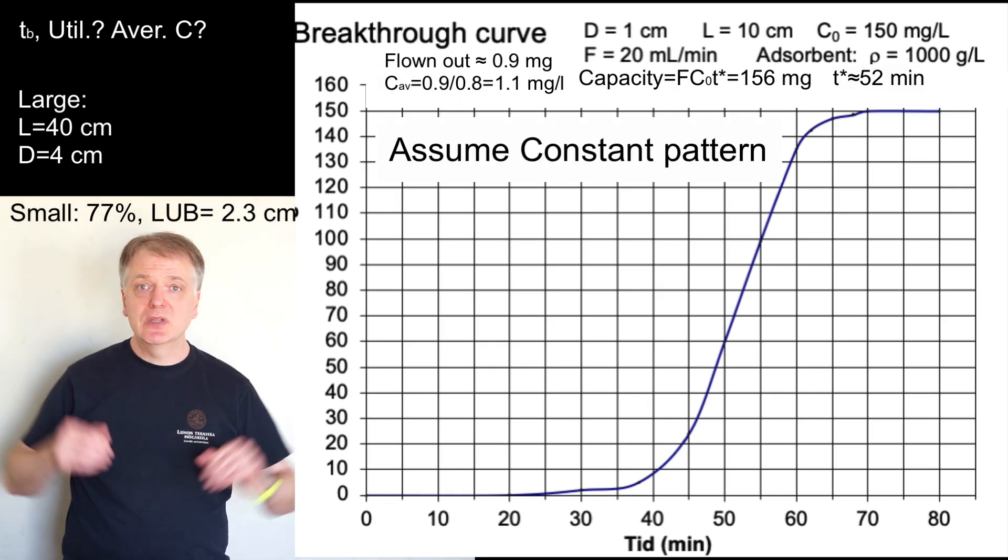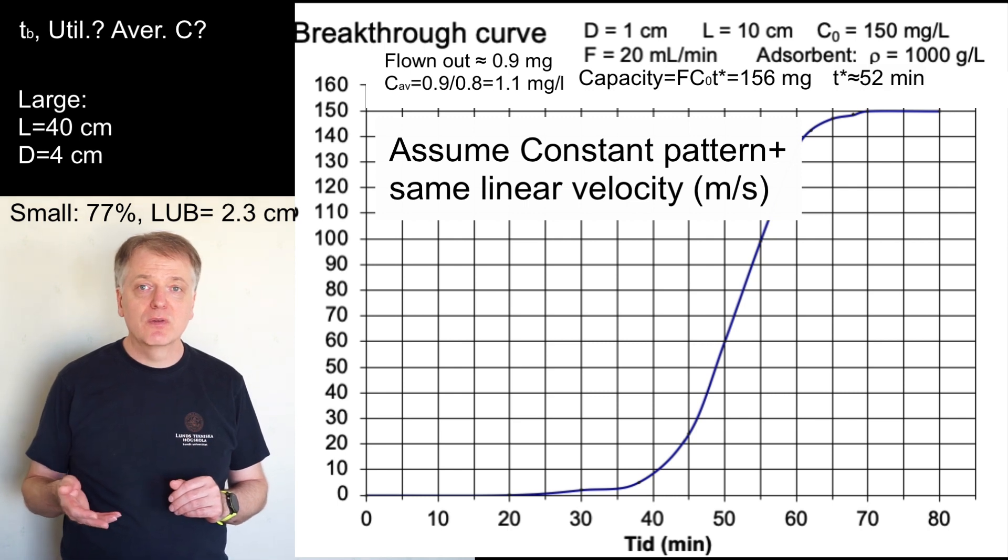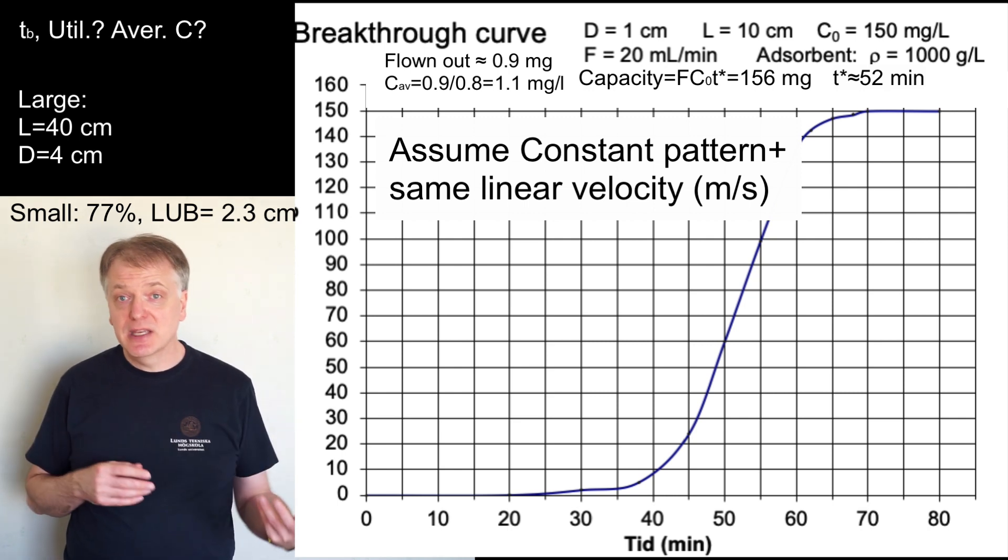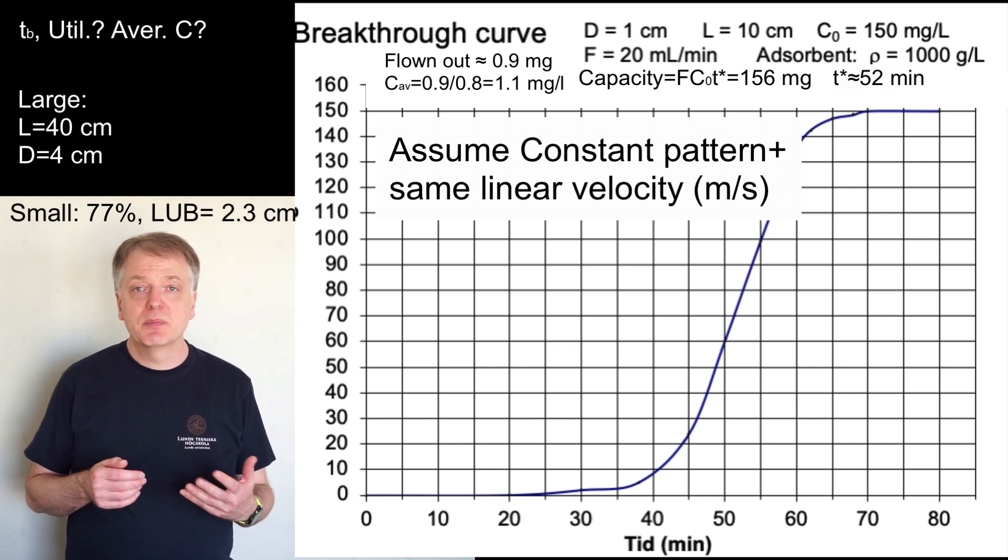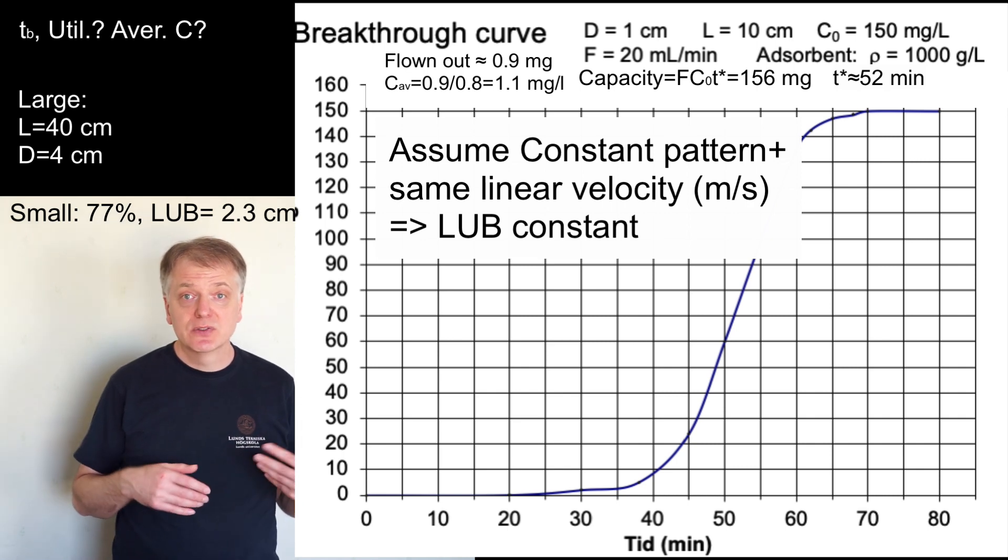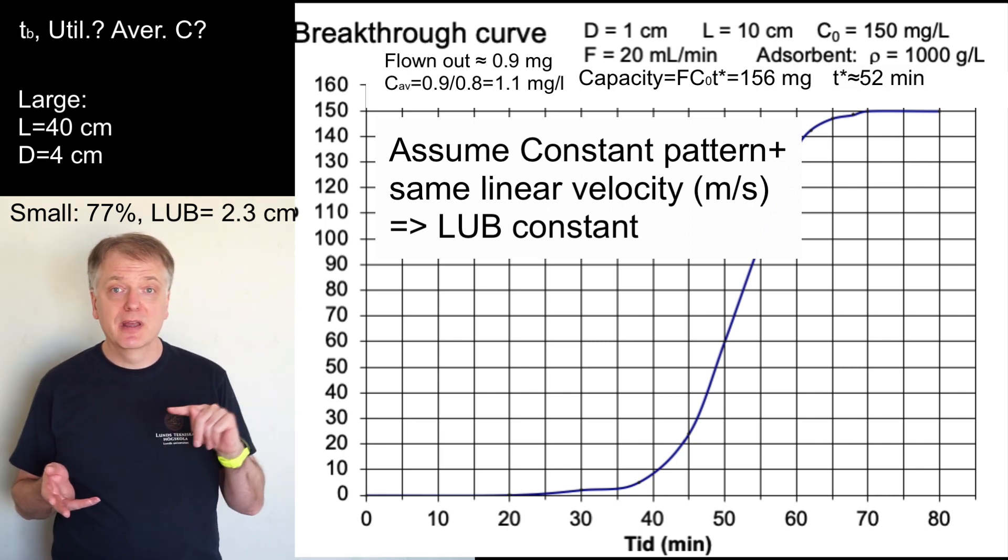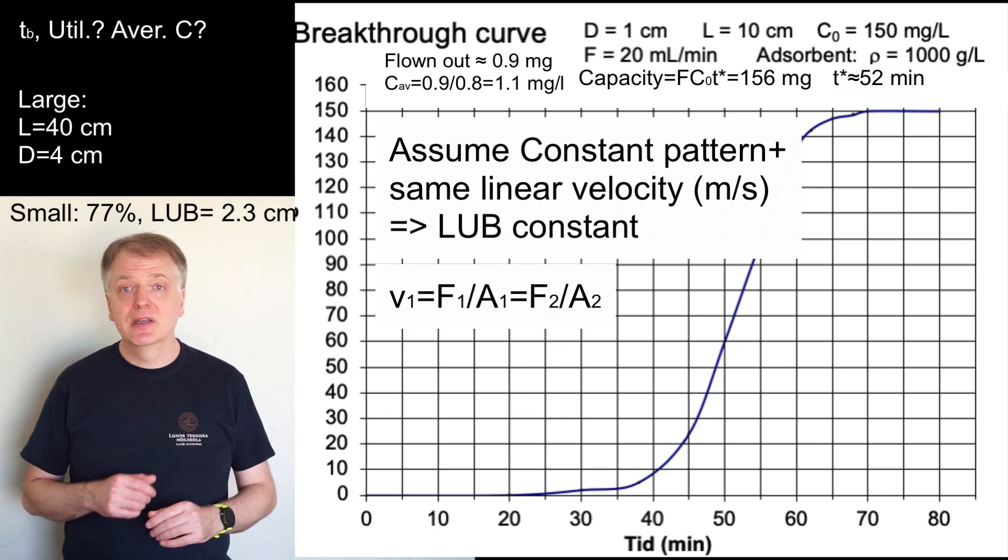When we now scale up we need to assume that we have constant pattern and make sure that the linear flow velocity in meter per second stays the same, such that the length of the unused bed stays the same. The area is larger in the larger column so we need to increase the flow rate.